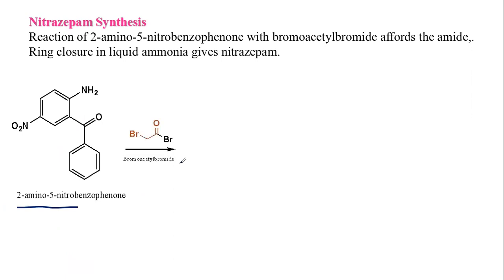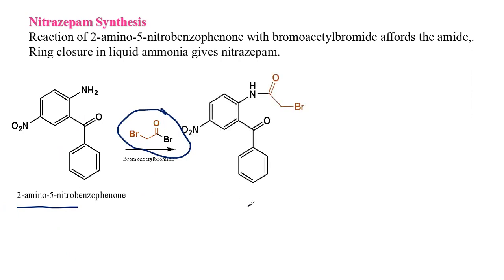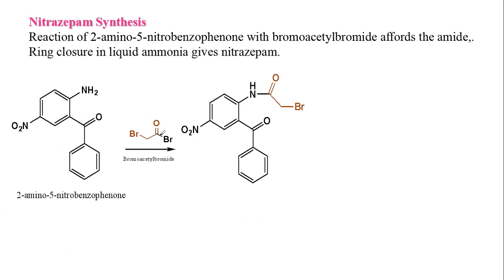This reactant undergoes reaction with bromoacetyl bromide. You can correlate using the color code of the substituents — C=O, CH₂Br. There is an interaction between the amino moiety and the bromoacetyl moiety, and we are getting Structure 2.